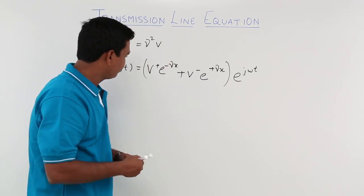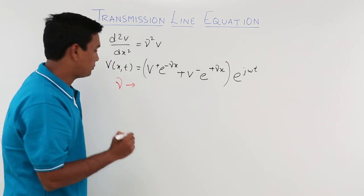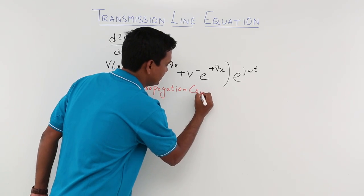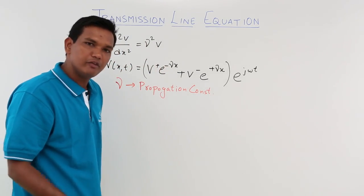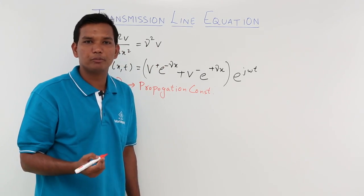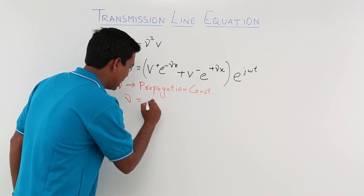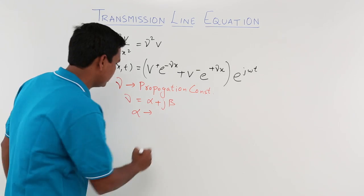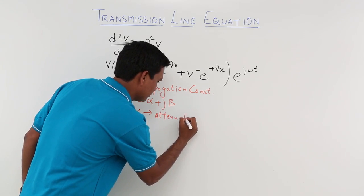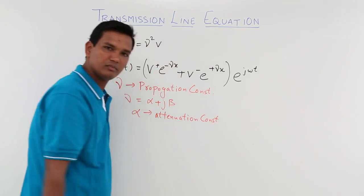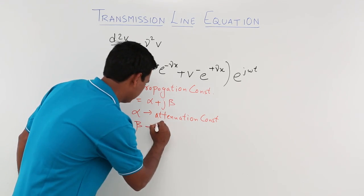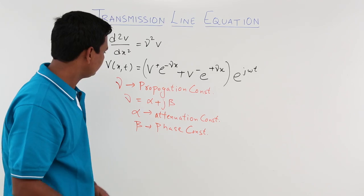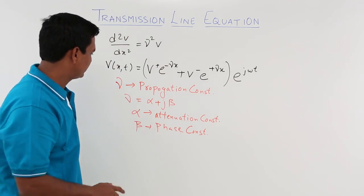What is this gamma? Gamma is actually called the propagation constant. We have already seen this when studying the plane wave equation — there was also a propagation constant there. So gamma is nothing but α + jβ, where α is the attenuation constant.